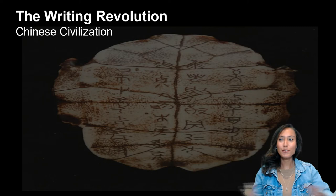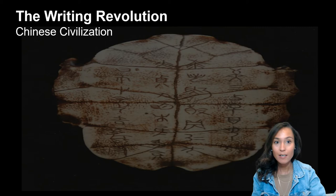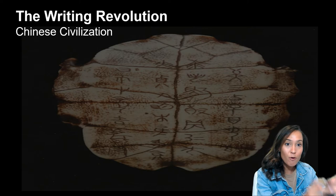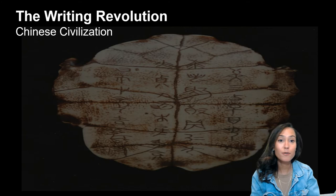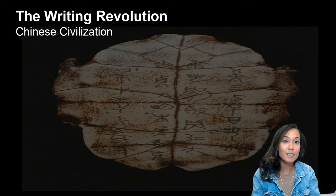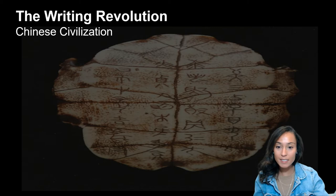Hi everybody. Welcome to Lecture 4.3, where we'll continue our conversation about complex societies in the old world and focus today on the development of writing in particular, using a case study of ancient China to compare to our discussion of Mesopotamian, Indus River Valley, and Southeast Asian civilizations in our previous modules. So let's get into it.